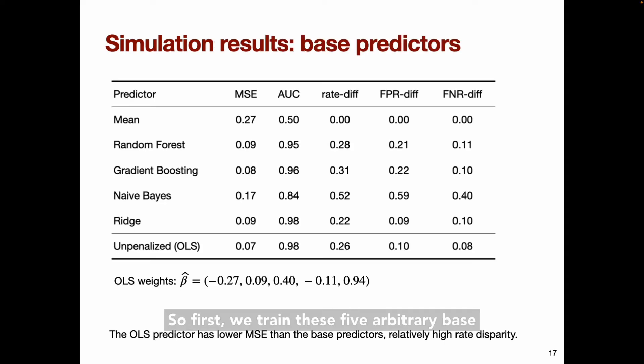So first we train these five arbitrary base predictors. Here, no tuning and no fairness constraints or penalties. We have here the mean squared error, the area under the curve, and the three unfairness measures that were introduced earlier. The mean predictor here is just a constant, so it functions similarly to an intercept in a linear regression. Since it's a constant, it has relatively high mean squared error, and it necessarily has a value of zero for all three unfairness measures. Here, zero means no unfairness, while one means the maximum possible unfairness. The other four base predictors have much lower mean squared error, but relatively high unfairness values.